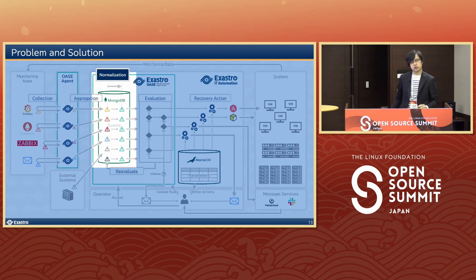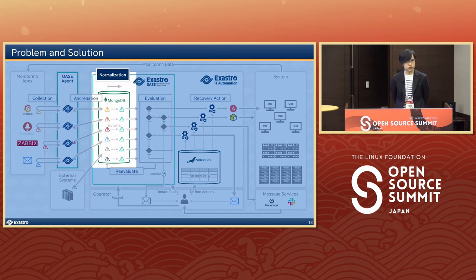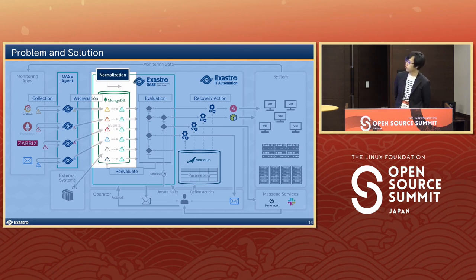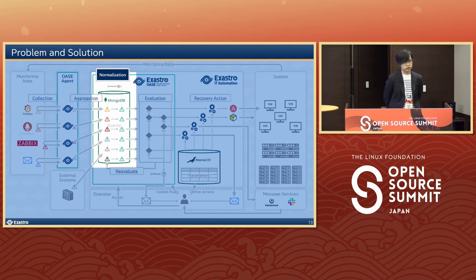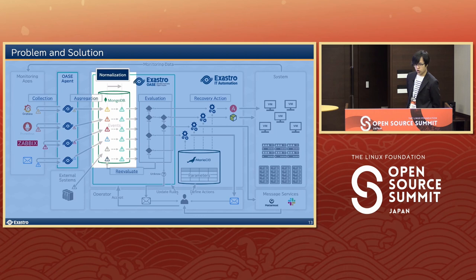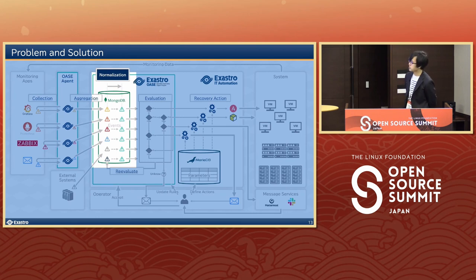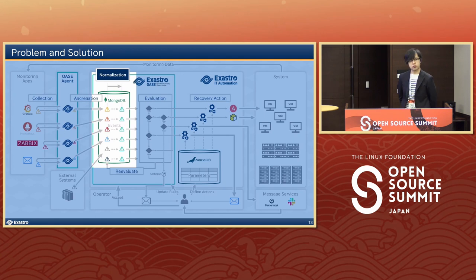We want the messages to be the same. While some monitoring apps might say 'system stopped,' one might say 'system equals stop' and another might say 'power equals down.' That automatically makes it harder as we now have to compare events with different data types. Because they're all different, the system is going to receive multiple alerts about the same problem. So we have to unify the data before we can compare them. This is where Exastro Oase comes in — it comes with a function of being able to label the events, so where we would have 'power equals down' or 'status equals stopped,' we could label them all as 'service down equals true.'